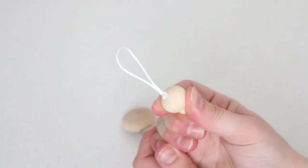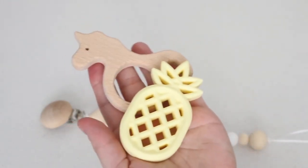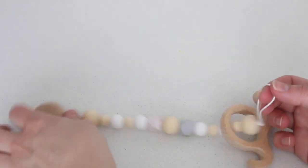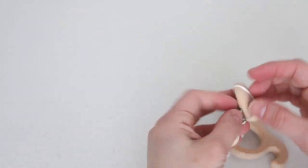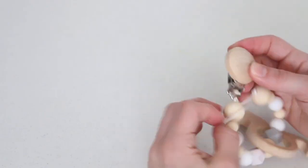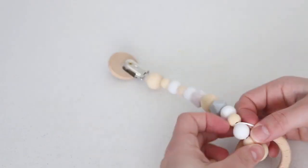Now you can pick any silicone teether toy you have, or maybe you want to attach it to a pacifier, but just loop it through whatever item you want and attach it to your baby's car seat or wherever it may be, and you are done.